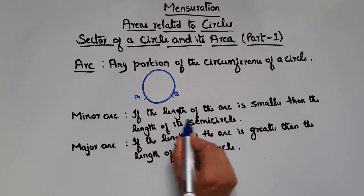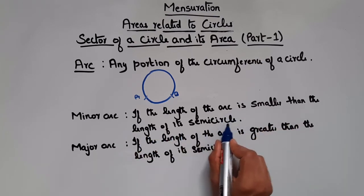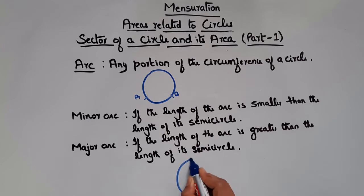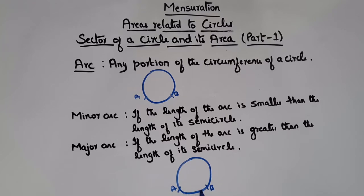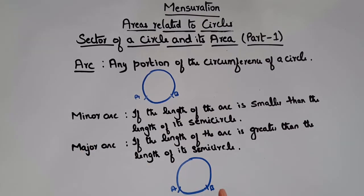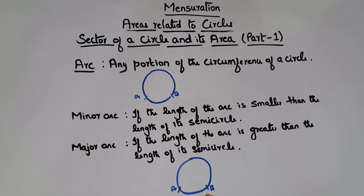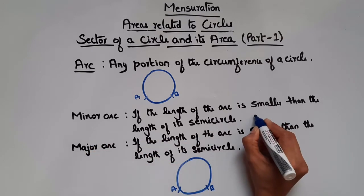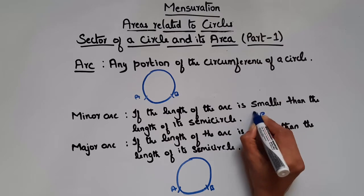What is a minor arc? If the length of the arc is smaller than the length of its semicircle, then it is called a minor arc. Let's draw a circle and take an arc AB. The semicircle is nothing but the half circle. So if the length of arc AB is less than the length of its semicircle, such arc is called a minor arc. And if the length of the arc is greater than the length of its semicircle, then it is called a major arc. So arc AB is called a minor arc.